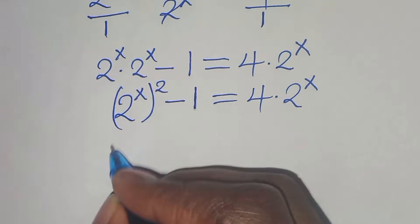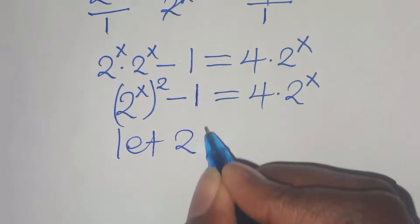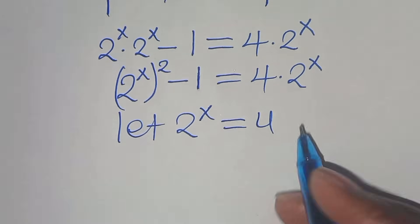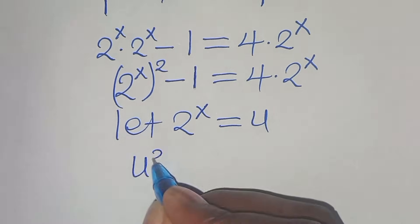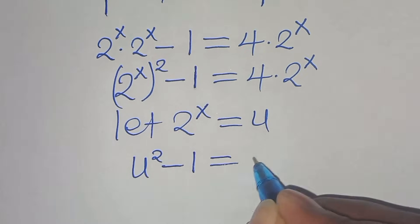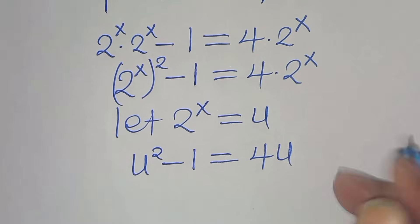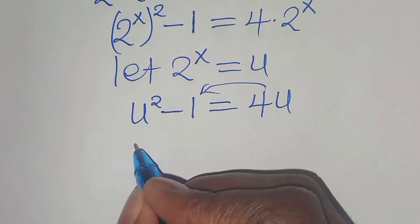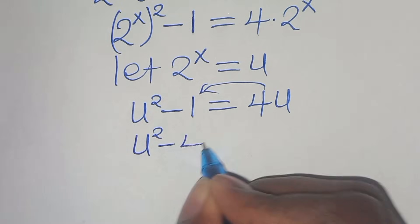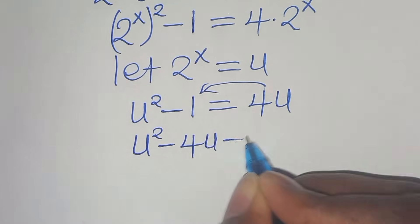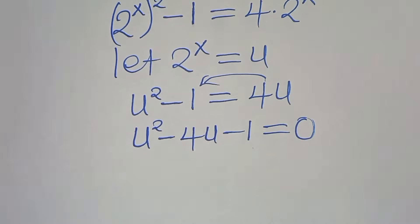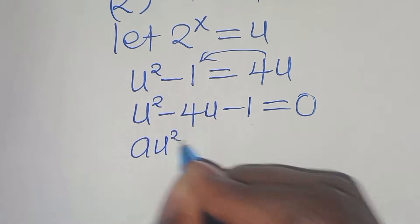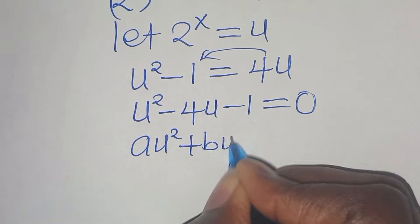From here, we let 2 to the power of x equal u and substitute, so we have u squared minus 1 equals 4u. Taking 4u to the left-hand side gives us u squared minus 4u minus 1 equals 0.